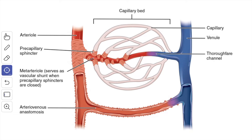However, when the muscle in the wall of the anastomosing channel contracts, its lumen is occluded so that all the blood now passes through the capillaries.